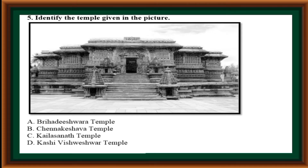Identify the temple given in the picture: options are Bruhadeeshwara Temple, Channakeshava Temple, Kailasanath Temple, Kashi Vishweshwar Temple. Correct answer is Option B: Beluru Channakeshava Temple.